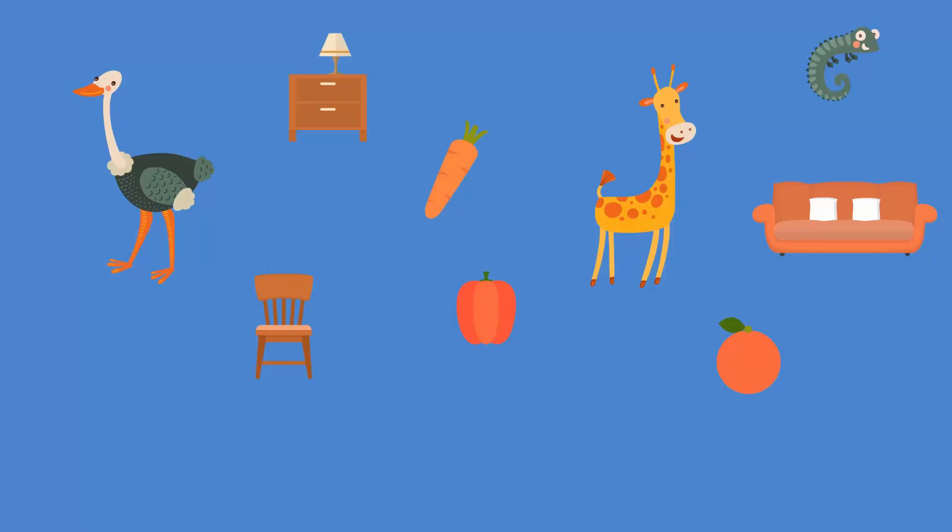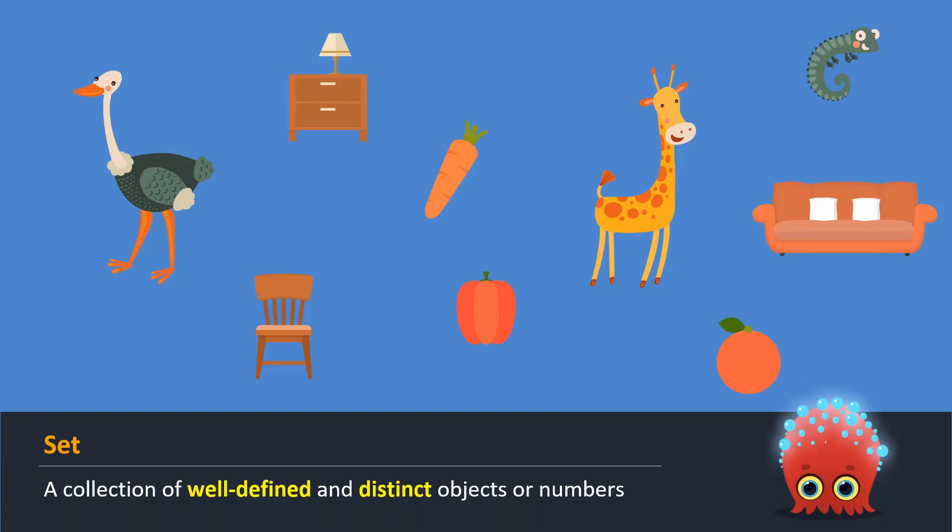Let us recall the concept of a set. A set is a collection of well-defined and distinct objects or numbers. These objects are randomly arranged.